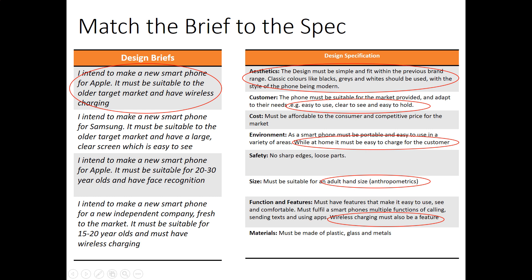Another brief says 'I intend to make a smartphone for Apple, suitable for 20 to 30 year olds and have face recognition' — it doesn't mention wireless charging. Another mentions an older target market with a large clear screen. So the correct answer is: 'I intend to make a new smartphone for Apple, suitable for the target market and have a wireless charging function.'